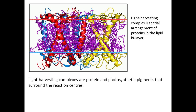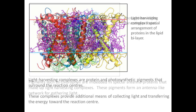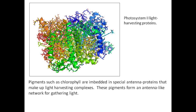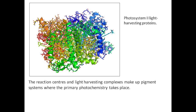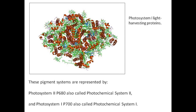Light harvesting complexes are proteins and photosynthetic pigments that surround the reaction centers, providing additional means of collecting light and transferring the energy toward the reaction center. Pigments such as chlorophyll are embedded in special antenna proteins that make up light harvesting complexes, forming an antenna-like network for gathering light. The reaction centers and light harvesting complexes make up pigment systems where the primary photochemistry takes place, represented by photosystem II and photosystem I.